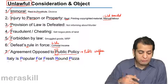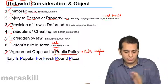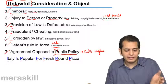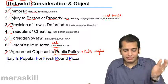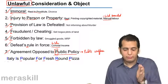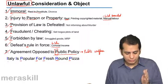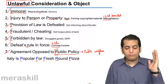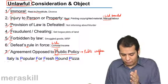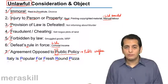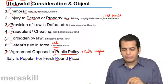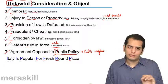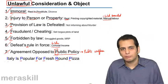So you can remember it easily by saying 'Italy is popular for fresh round pizza.' I in Italy is immoral, then the next I is for injury, P for provision, F for fraudulent, the next F for forbidden, R is for rule in force — defeating the rule in force — and finally P is for agreements which are opposed to public policy.